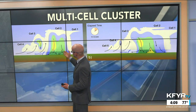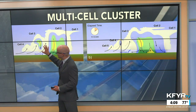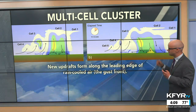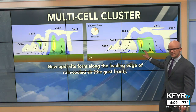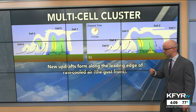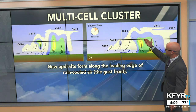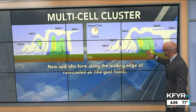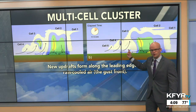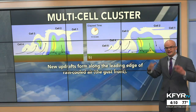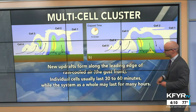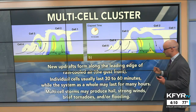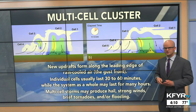You can see each one of these individual cells growing, falling apart, sustaining a much larger complex — a multi-cell cluster of storms. In this schematic, each one of these individual cells can grow, dissipate, and form new cells back on the upwind side. New updrafts form along the leading edge of rain-cooled air, or the gust front. Each one of these cells forms, grows to a large size, then dissipates. That downdraft and rain-cooled air hits the ground and spreads out, leading to more new thunderstorm cell initiation nearby. Individual cells usually last 30 to 60 minutes while the system as a whole can last for many hours.